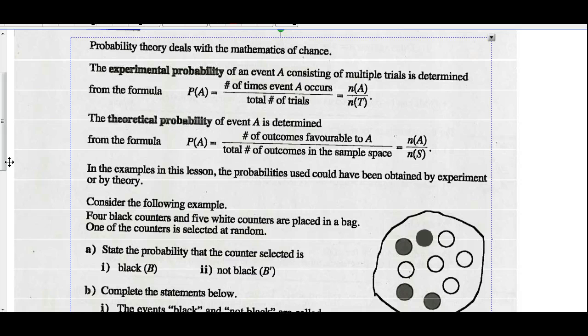So those are two different ideas of the same thing, experimental and theoretical. And the examples in this lesson, the probabilities used could have been obtained by experiment or by theory.